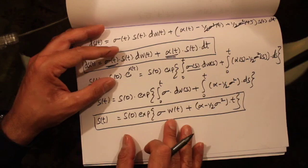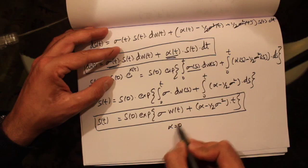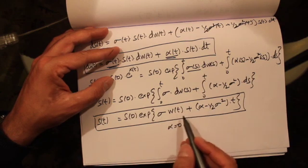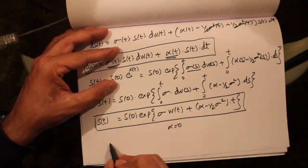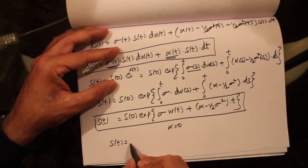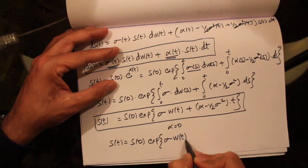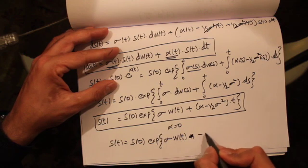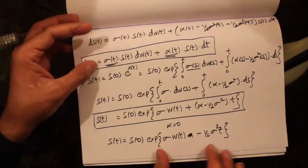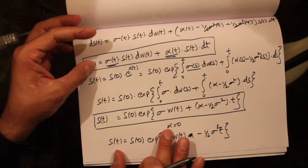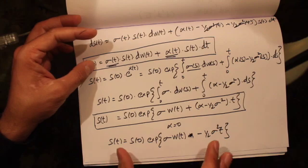Now let's consider what happens when alpha equals zero. With alpha constant and equal to zero, let's look at the value of the stock price, which becomes S₀ · e^{−one-half sigma squared · t}. I want to show that this stock price is a martingale when alpha equals zero.